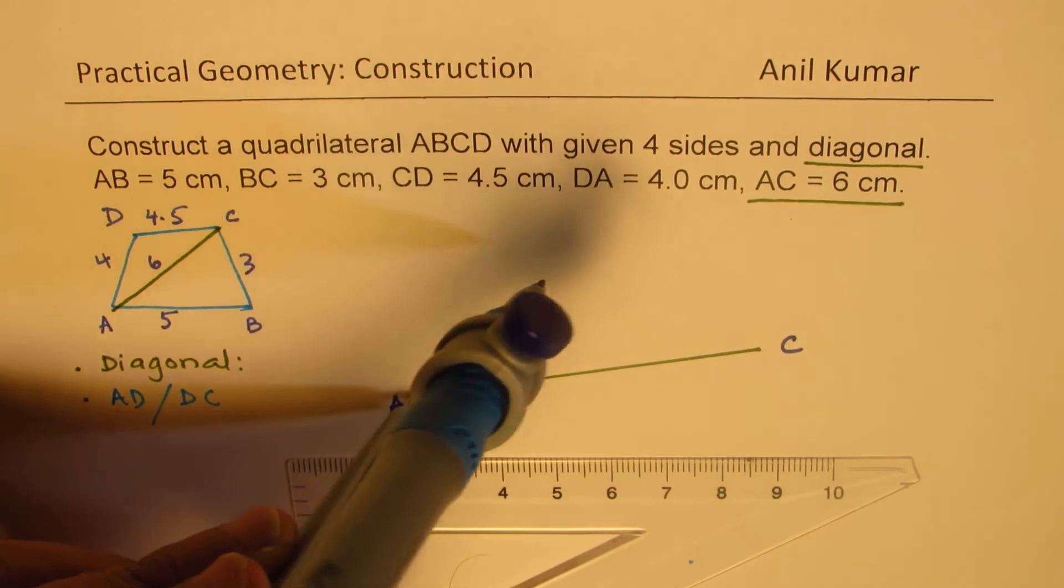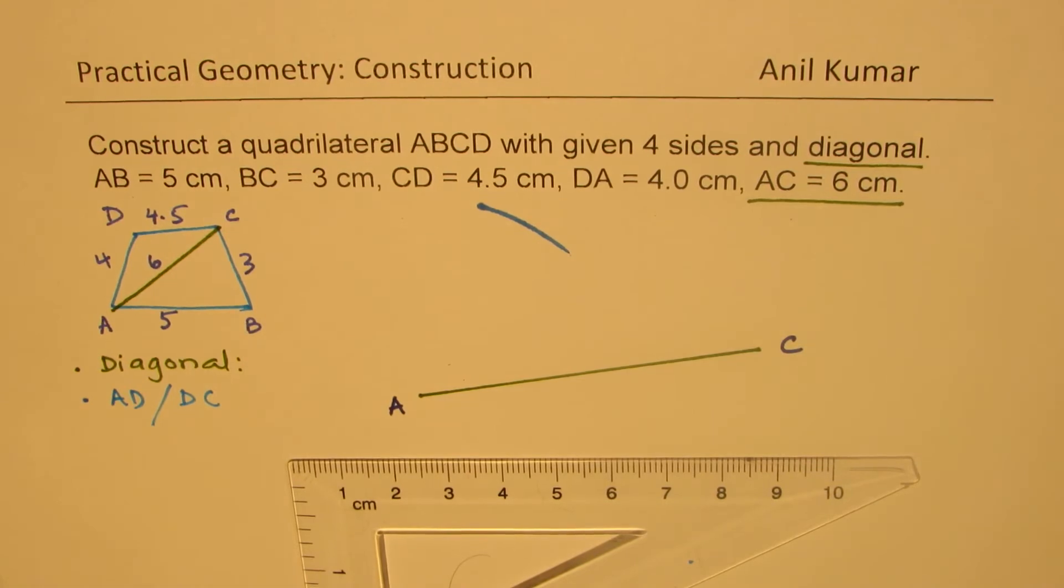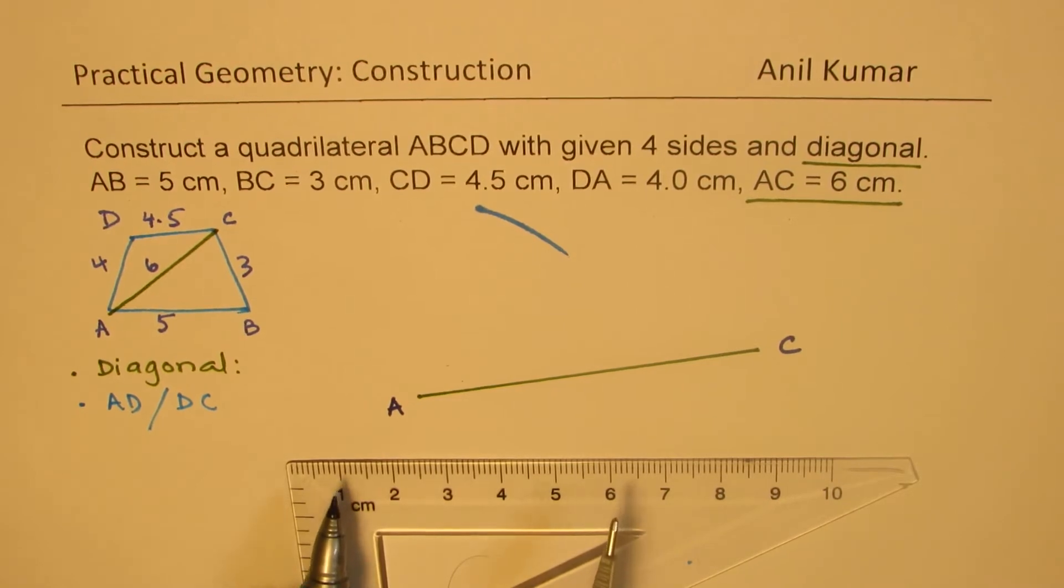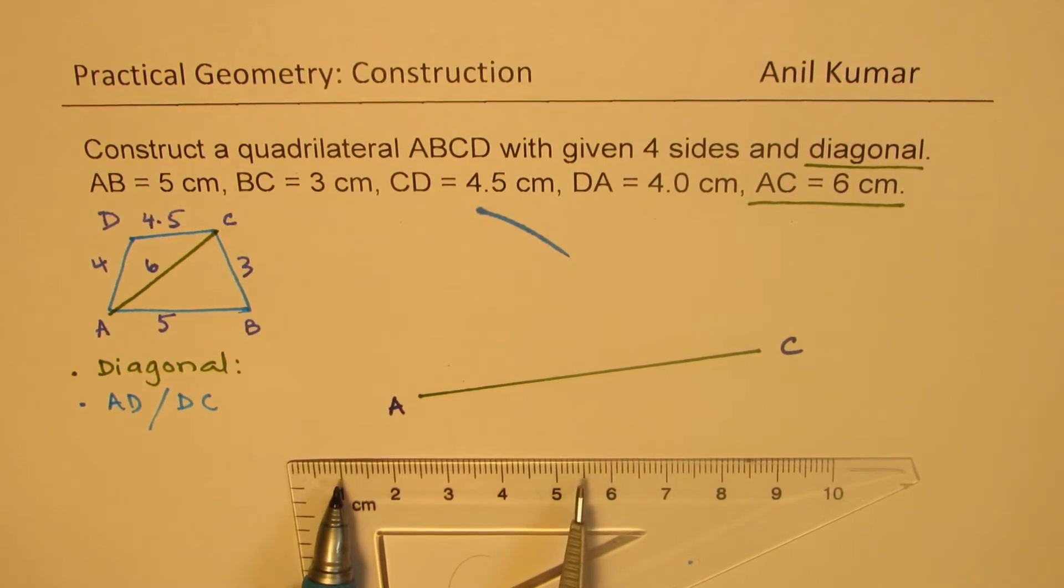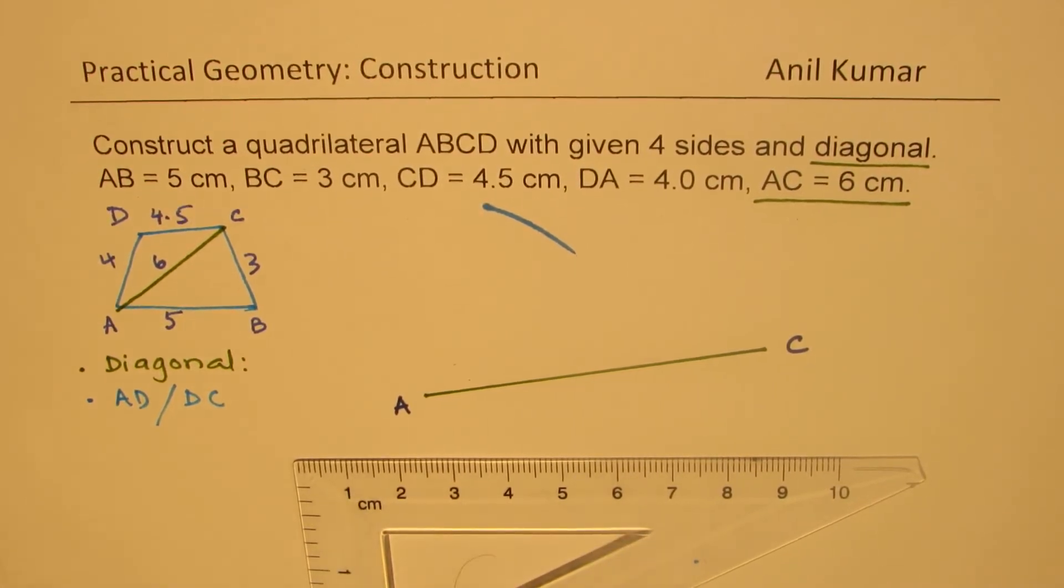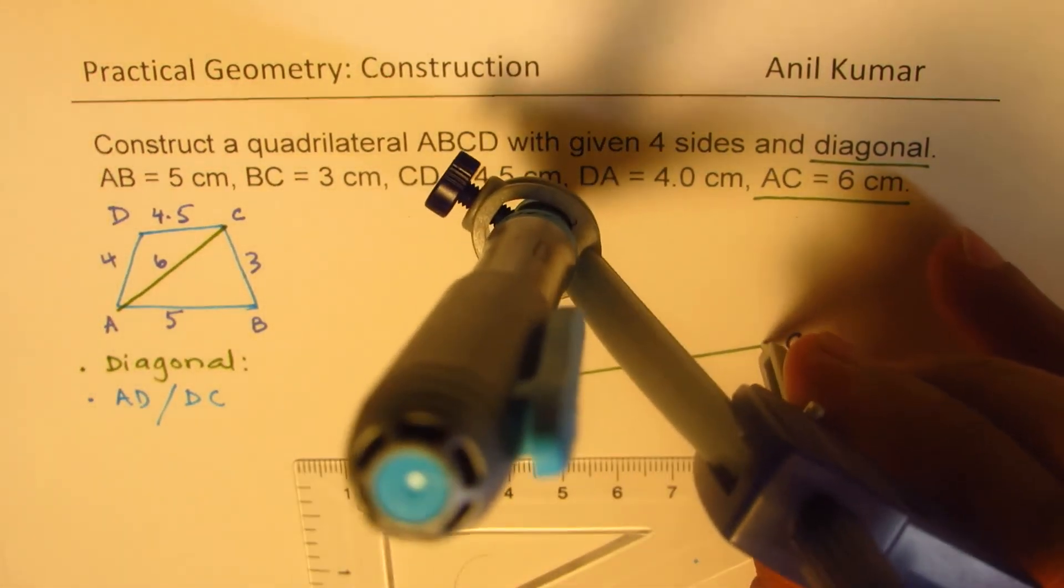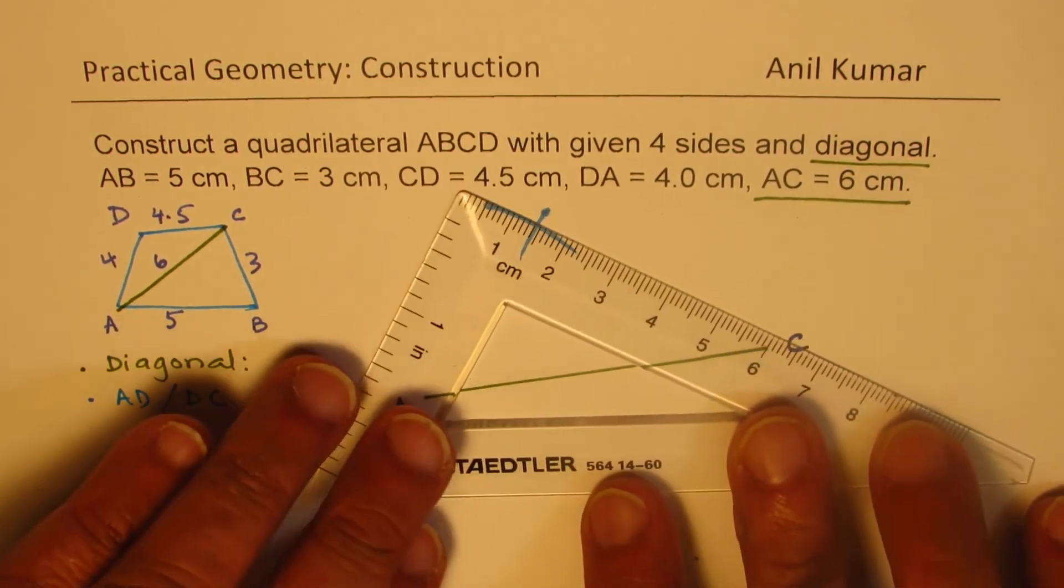Now increase the length to 4.5 centimeters so that you get the other part. So 4.5 centimeters means 1 to 5.5. We go from 1 to 5.5 which is 4.5 centimeters. Place it on C and mark, so we get one point here which is the point D. So we can join these two points.